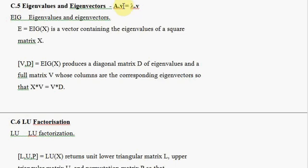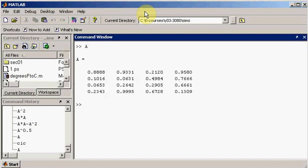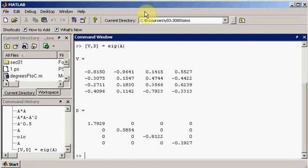So let's look at how we can get this set of Vs and lambdas. The statement `eig(x)` will return, if we ask it for two outputs, V being the matrix in which we are writing the eigenvectors in the column space, and D being the matrix for which the diagonal contains the corresponding eigenvalues. So let's try and find the eigenvectors and eigenvalues for this matrix A.